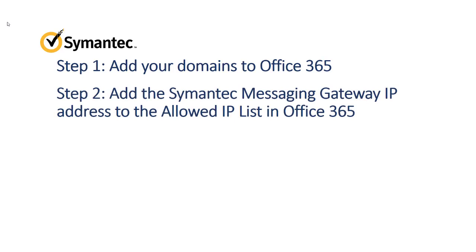Step 1: Add your domains to Office 365. If you already moved your mail service to Office 365, you already completed this step. Step 2: Add your Semantic Messaging Gateway IP address to the allowed IP list in Office 365. This whitelists all incoming traffic from Semantic Messaging Gateway. Any Office 365 spam protection that you've set up will be disabled, but all other Office 365 filters, such as antivirus, are not affected.